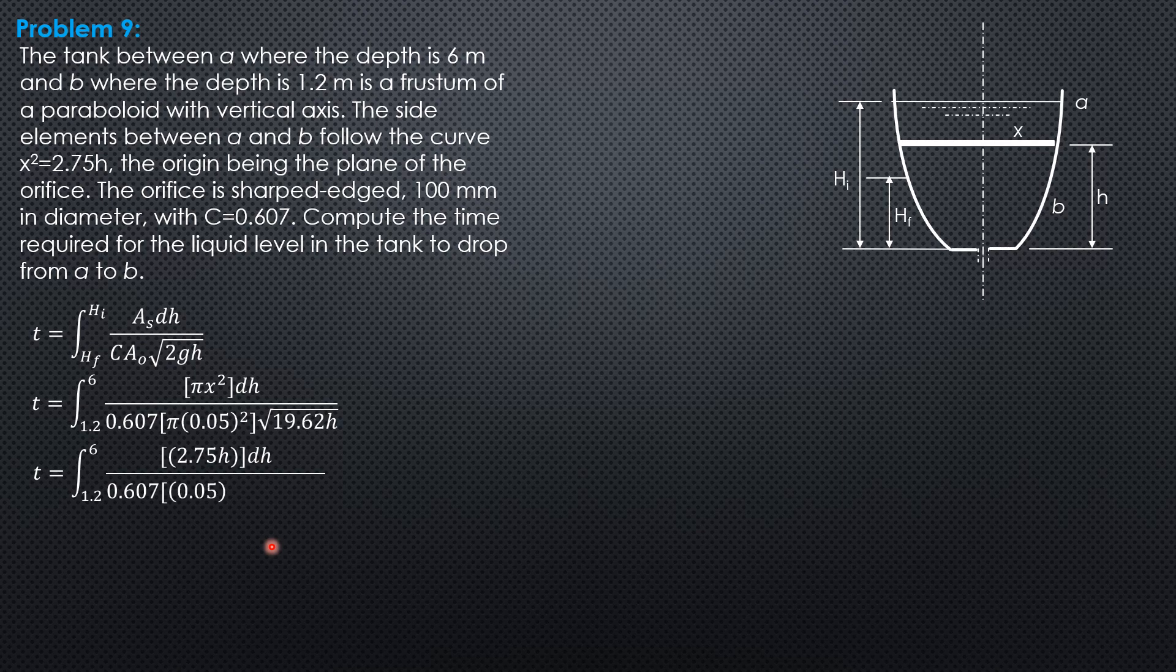Then we can evaluate the constant: 2.75 over quantity 0.607 times 0.05 square root of 19.62. And the integral of H over square root of H is integral of H to the 1/2, which is H to the 3/2 over 3/2, or 2/3 H to the 3/2.